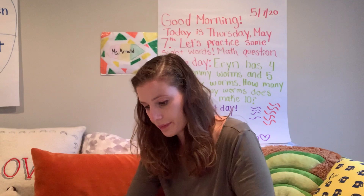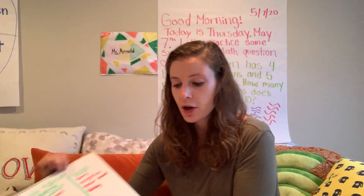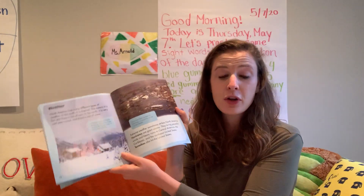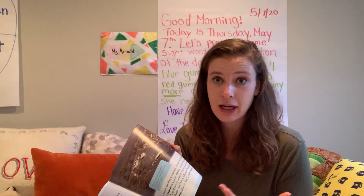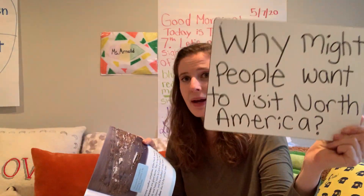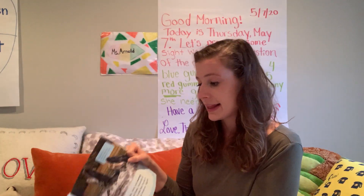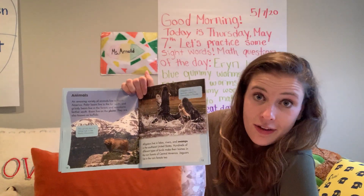Now, we don't have a page or a section that says weather, so we're going to skip past the weather section of our book. That would be something useful if our question was asking us what kind of weather is in North America, then we would definitely need to write this down. But our question is why might people want to visit North America? So we don't need to talk about hurricanes or anything like that. Our third section is animals, because you might want to come and see these kinds of animals.